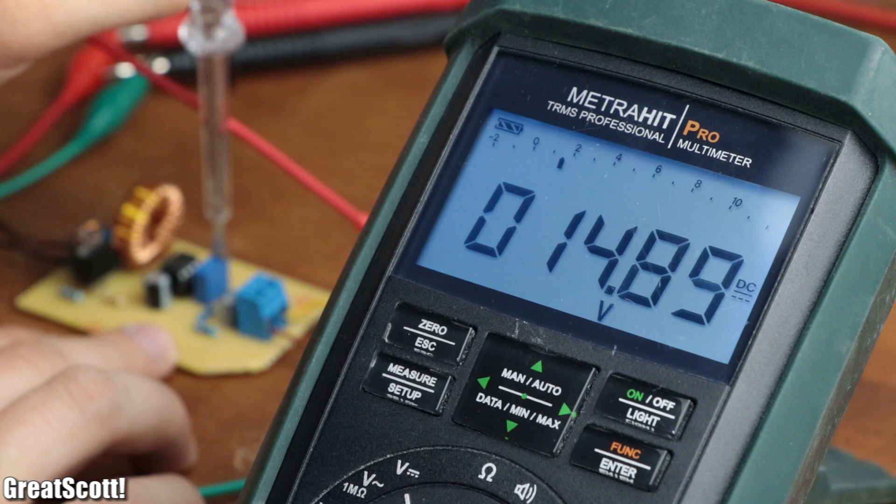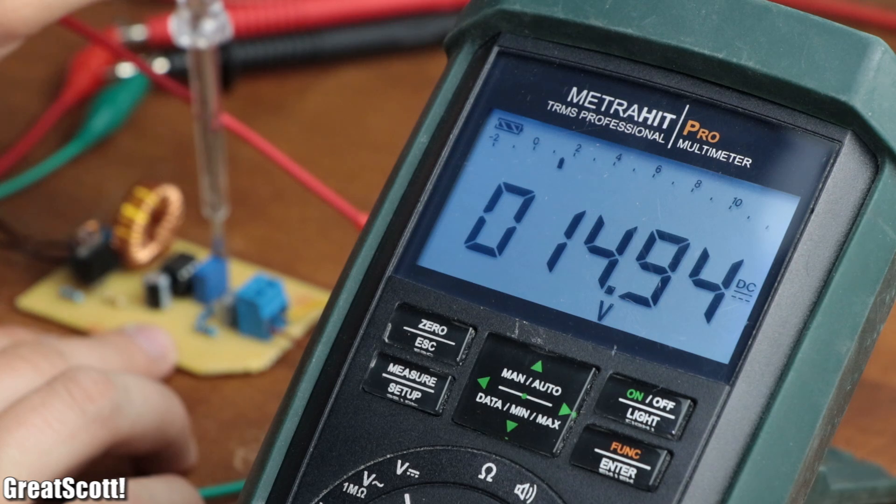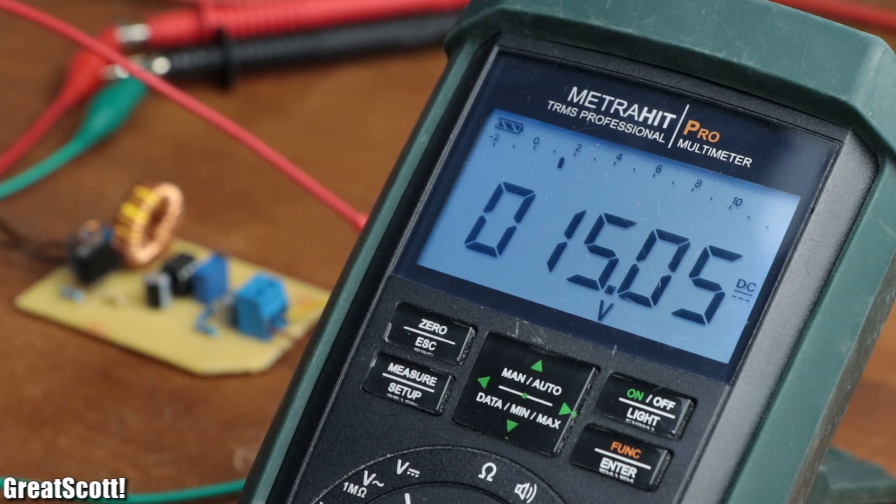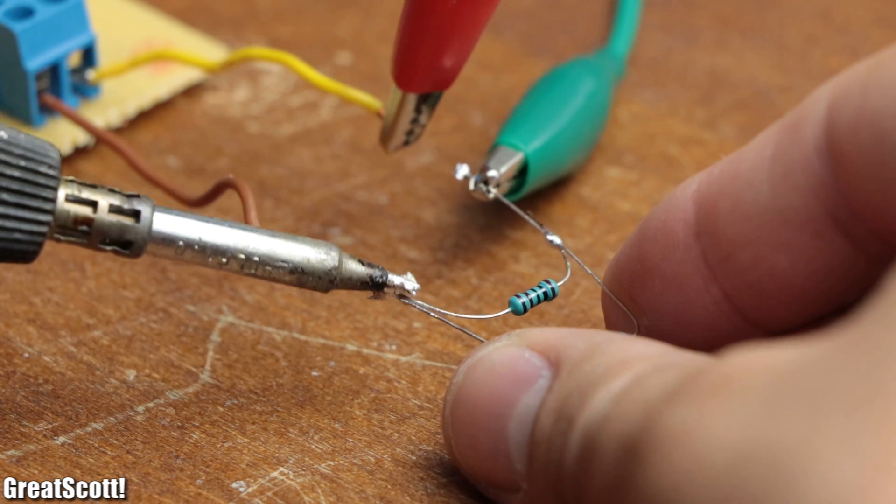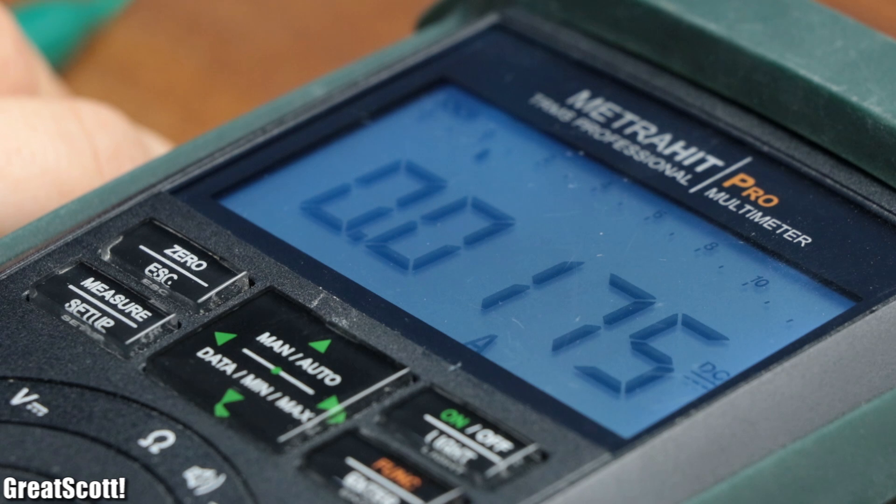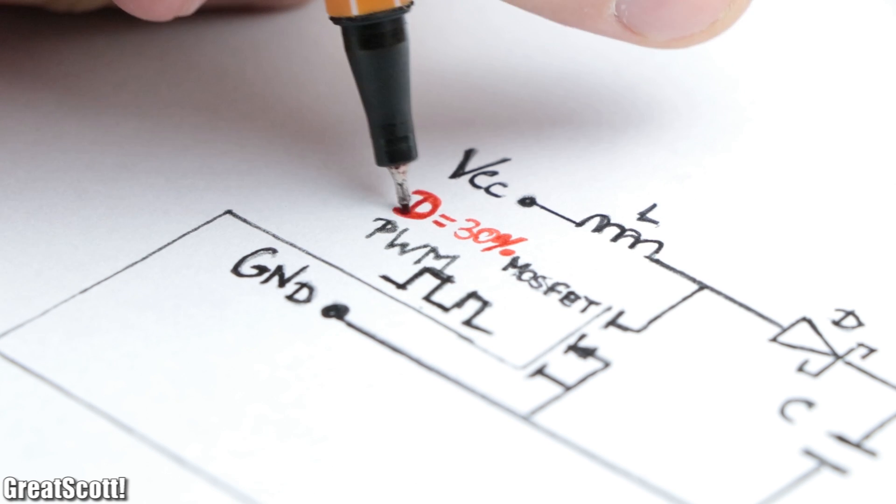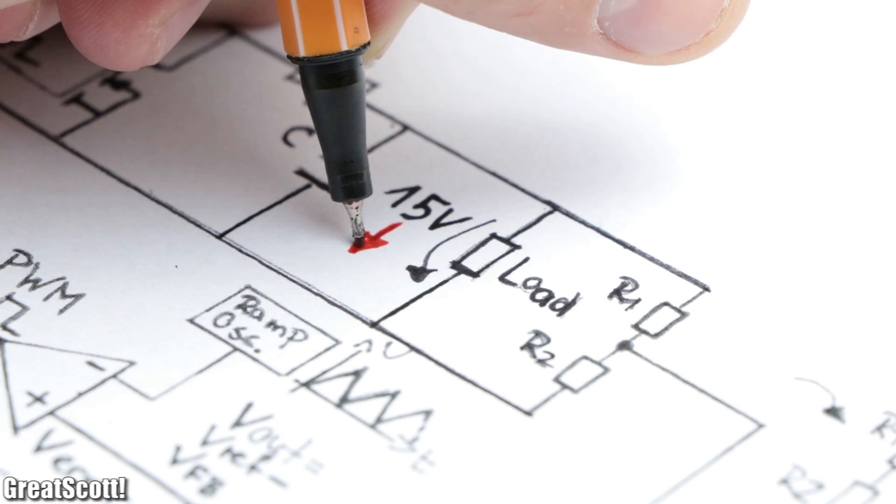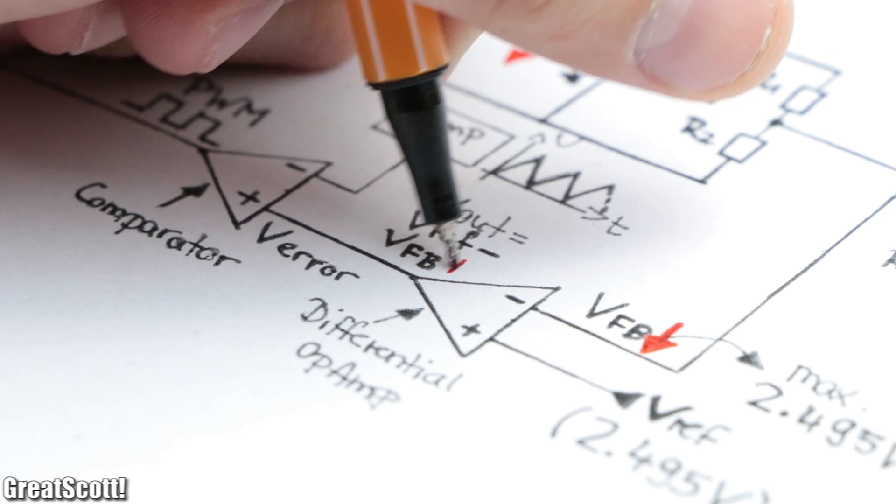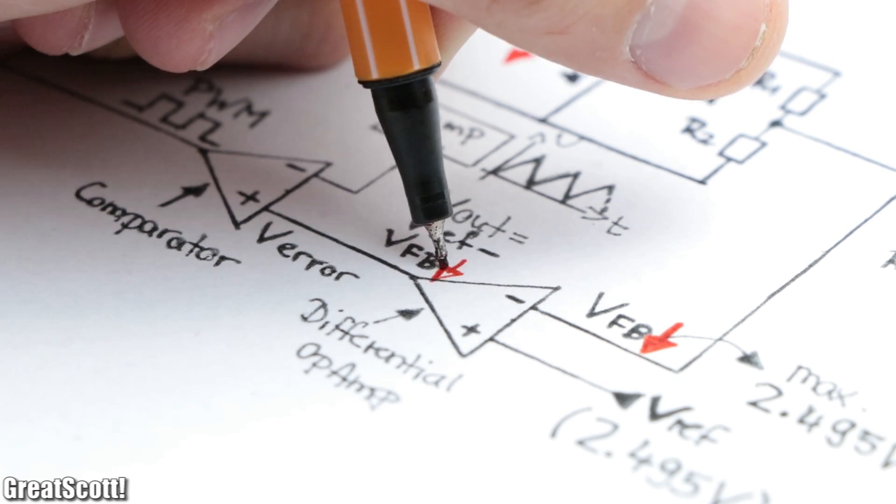Well, let's imagine we got a constant voltage of 15 volts at the output. And now we add a resistor in parallel which would obviously draw more current on the output. Since the duty cycle is not adjusted yet, the output voltage would decrease, which means the feedback voltage would decrease as well.